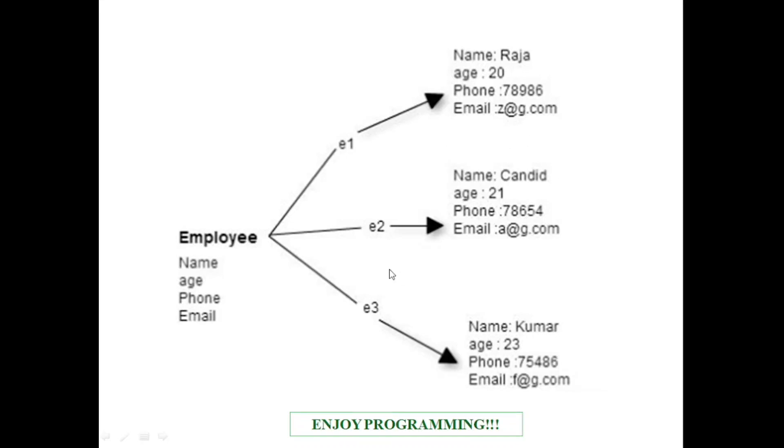Similarly, E2 is an object. E3 is an object. It is an instance. Logical separation is there.